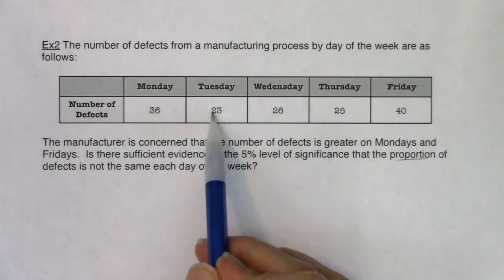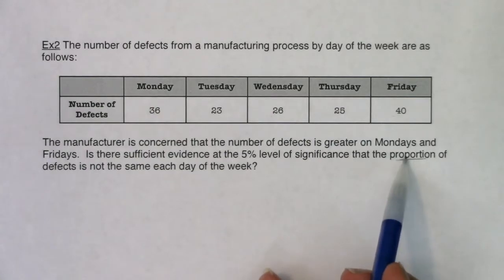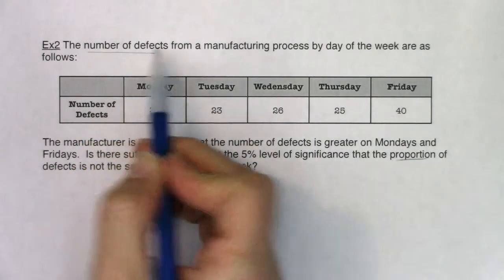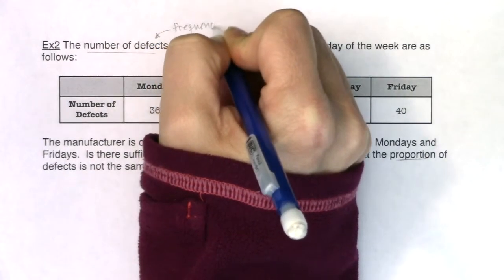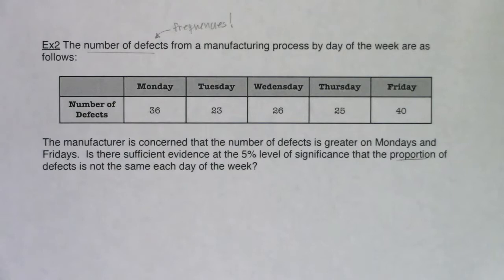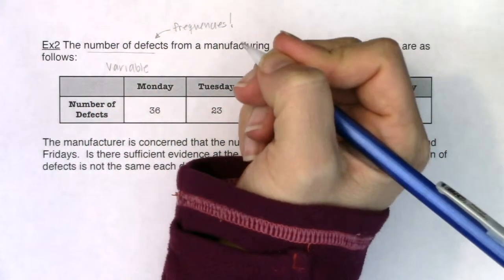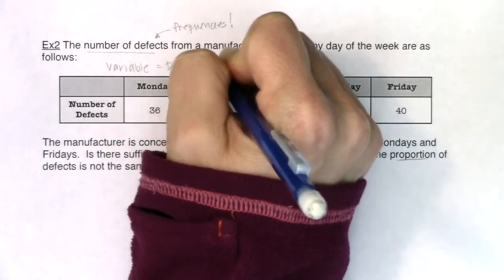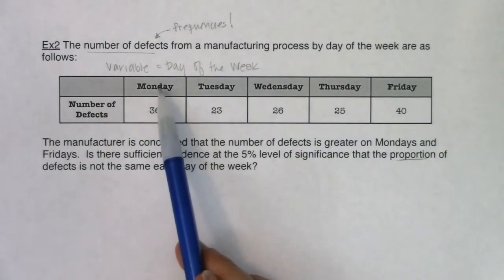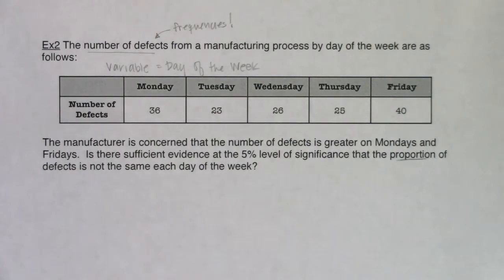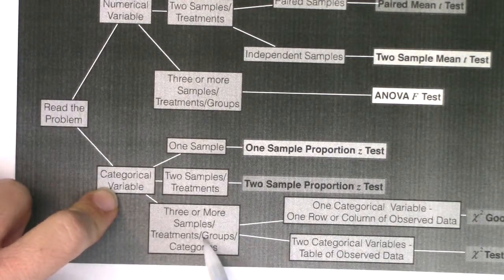These numbers are frequency counts. Anytime we have frequencies, we turn them into relative frequencies or proportions by dividing by the sample size. The variable here is the day of the week — a categorical variable. For every defect made, we track it by assigning it a category: Monday, Tuesday, Wednesday, Thursday, or Friday. Moving through the flowchart: it's a categorical variable with five groups, five categories — one for each day of the week. I only have one variable in this problem.